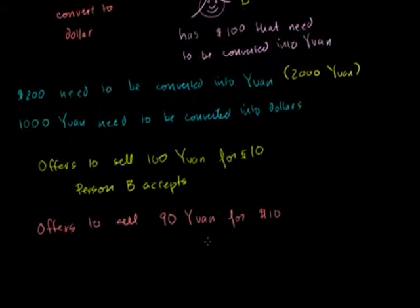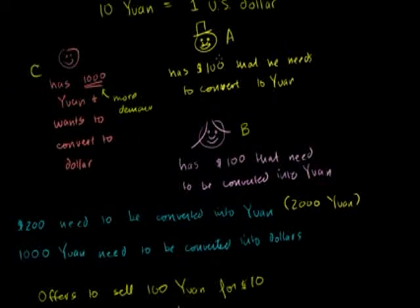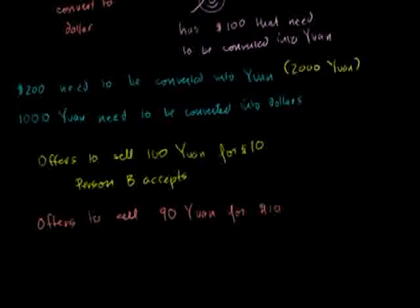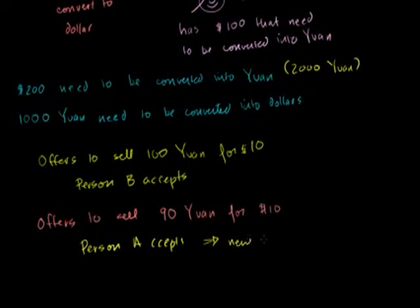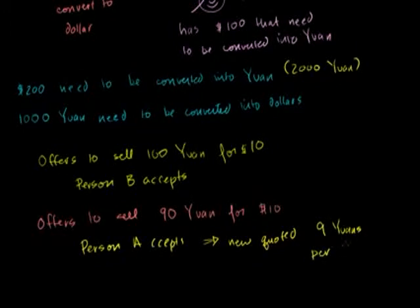Notice the price of the yuan has now gone up, or equivalently the price of the dollar has gone down — those are symmetric statements that mean the exact same thing. Person A accepts really fast because he has a lot of dollars he needs to convert into yuan. All of a sudden, we have a new quoted exchange rate: the transaction happens at 9 yuan per dollar.